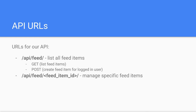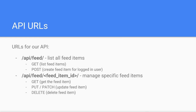Second, we will have a feed item detail API which is the /api/feed URL with a specific feed item ID after it. This will support the following methods: HTTP GET for getting the details of a specific feed item — this is known as the detail view — and HTTP PUT or HTTP PATCH for updating a feed item, and finally HTTP DELETE for deleting a feed item.